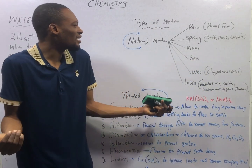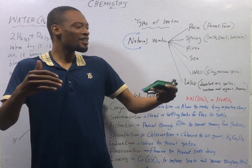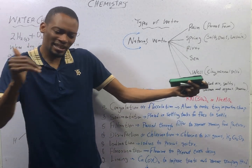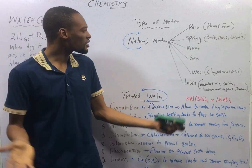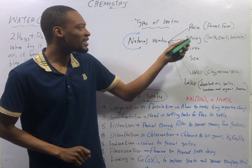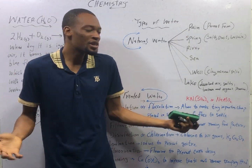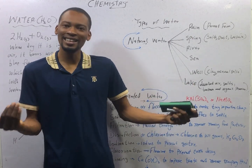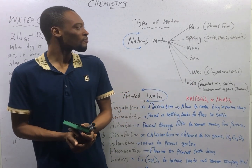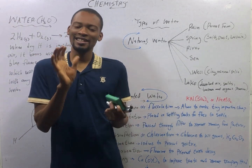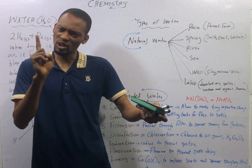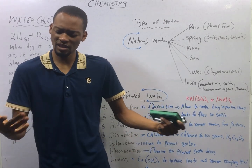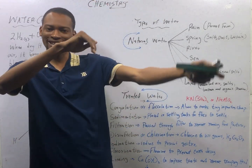Natural water, as the name implies, is water found in nature. It is not artificial or it has not been tampered with. The sources of natural water are rain water, spring water, river water, sea water, well water and lake water. Rain water is the purest form of natural water — take note of that — because it is formed as a result of evaporation and condensation.